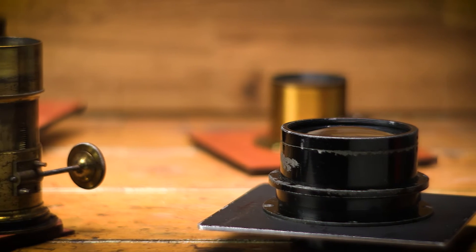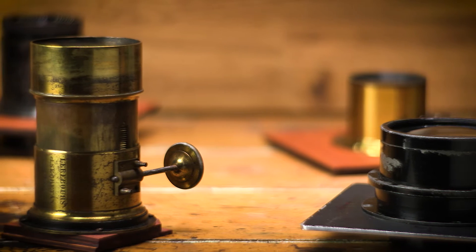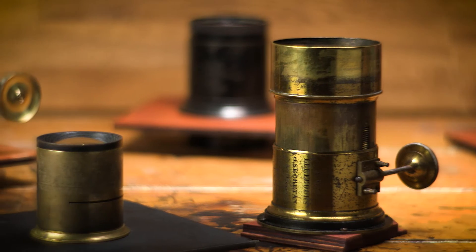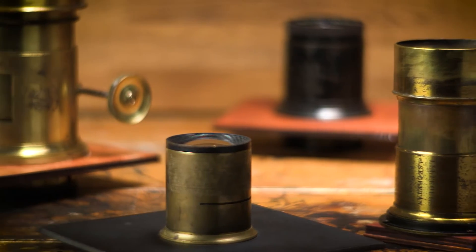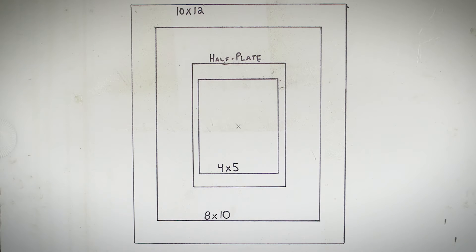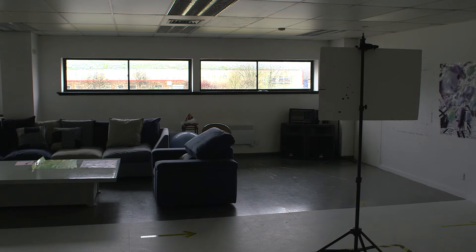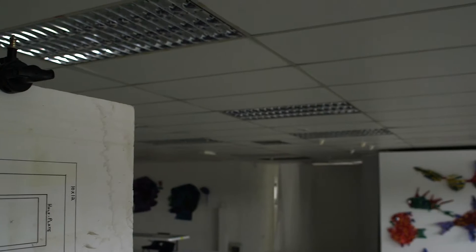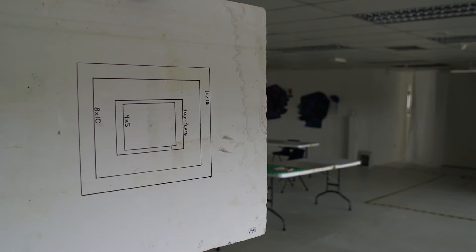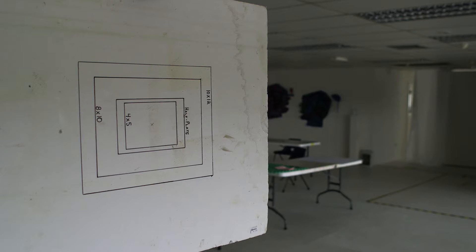Determining the coverage area of your new lens is pretty simple. There are multiple ways to do this. The first and most obvious one, if you have a compatible lens board, is simply to mount it to your camera. If you don't have a compatible lens board, you can try things like a Universal Iris. If you don't have either of those things, you can do something like this. I've made a coverage chart of the plate sizes I most often shoot and we're going to test the coverage of several lenses. I'm in a dimly lit room with a large bank of windows, and I've placed the chart in landscape orientation so I can use the width of the bank of windows to determine the coverage area of the lens's image circle.